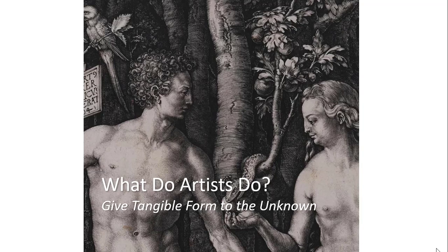Let's talk about another role that artists play in society: artists give tangible form to the unknown. Tangible means something you can actually see and hold onto — it's concrete. There are things throughout history that are very difficult to visualize. Artists have done that throughout history. This is Adam and Eve you're looking at right now, and Eve is taking the apple from the serpent — this is that artist's rendition, so that as you heard the story, actually seeing it helps put it into place.